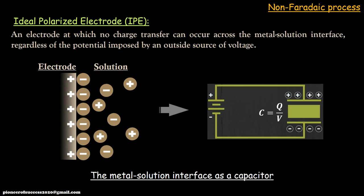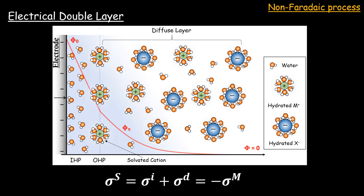Now let us talk about an ideal polarized electrode, which is about the non-faradic process. Suppose you have an electrode which is positively charged — this positively charged electrode attracts negatively charged ions near to the electrode and there is no bulk resistance. Ions are free to come and sit on the electrode surface based on the charge on the electrode surface, and that forms an ideal capacitive solution or ideal electrolytic capacitor, called an ideal polarized electrode. But in reality, the situation is a little bit different. If you dip a charged electrode inside an electrolyte, nearer to the electrode, the oppositely charged ion comes and forms a layer which is called the inner Helmholtz plane or inner Helmholtz layer.